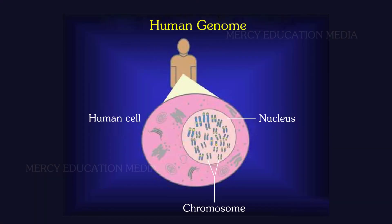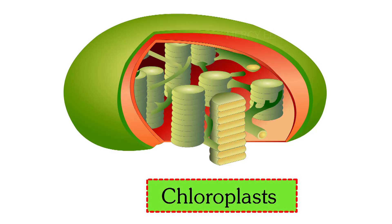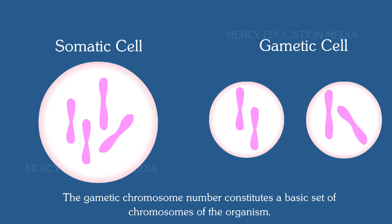The genome is an organism's genetic material. Genome may be defined as the totality of the DNA sequences of an organism, including DNAs present in mitochondria and chloroplasts. Each species has a characteristic number of chromosomes in the nuclei of the gametes and somatic cells. The gametic chromosome number constitutes a basic set of chromosomes of the organism.